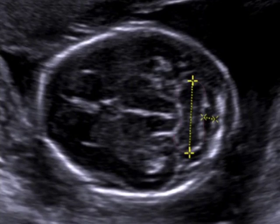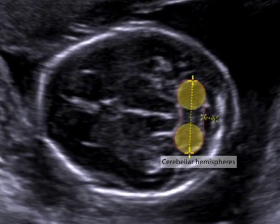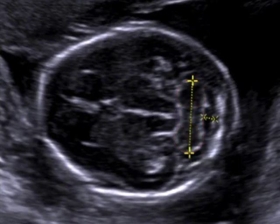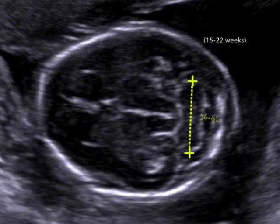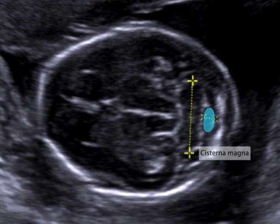Sonographically, the cerebellum is dumbbell-shaped and is comprised of two rounded hemispheres and an intervening vermis. The transverse cerebellar diameter is measured from outer edge to outer edge. A useful rule is that from 15 until 22 weeks, the cerebellar diameter in millimeters is approximately equivalent to the gestational age in weeks.